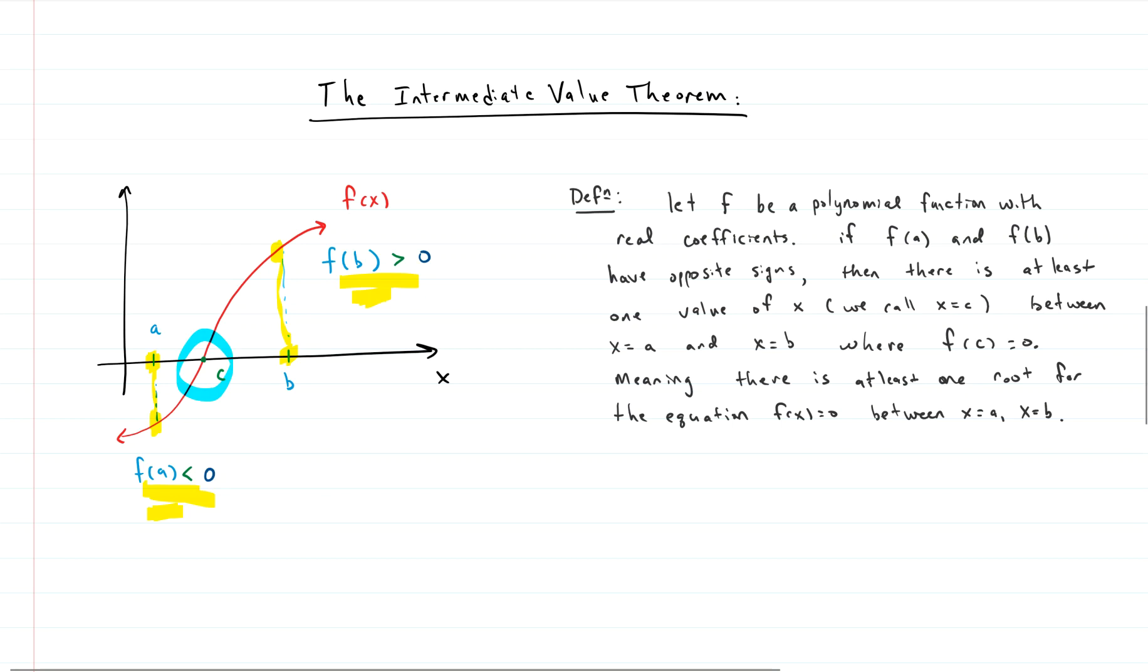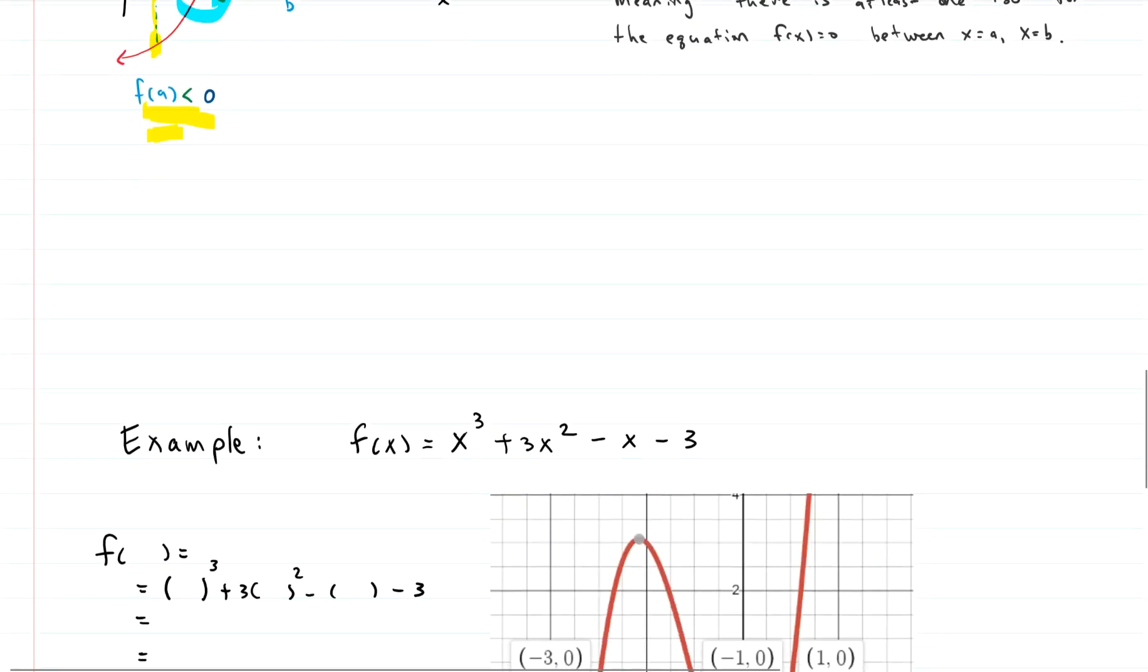It says there's this intermediate value, we call it c in our definition here, that must appear if the function evaluation at a and the function evaluation at b are different signs. If they have opposite signs, then there is at least one zero. We'll call that zero x equals c, between x equals a and x equals b. That's it. That's the intermediate value theorem. Kind of cool, huh? It just means you can't go from below the graph, below the x axis to above the x axis, without passing through zero, passing through the x axis.